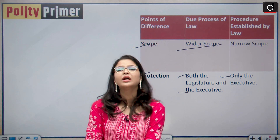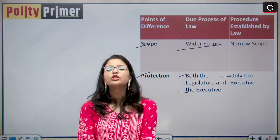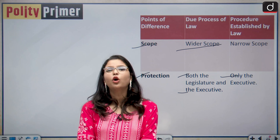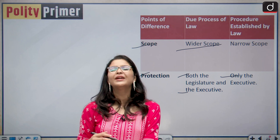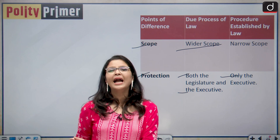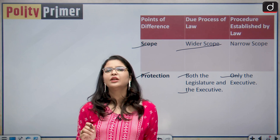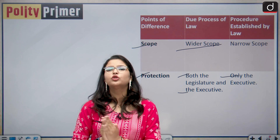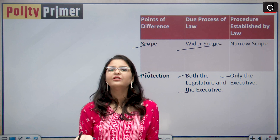In conclusion, we have seen what is due process of law and what is procedure established by law. The doctrine of due process of law is taken from the US Constitution and is not explicitly mentioned in our Indian Constitution. The doctrine of procedure established by law is explicitly mentioned under Article 21 of the Indian Constitution. We compared both doctrines and saw how they evolved in India.